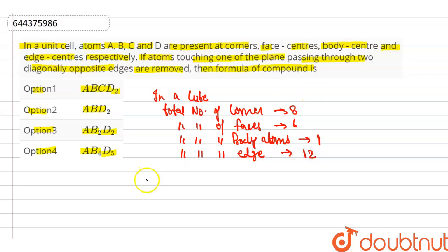So our A is 8 and B is 6 and C is 1 and D is 12. Now, our question says if atoms are touching one of the plane passing through two diagonally opposite edges are removed.